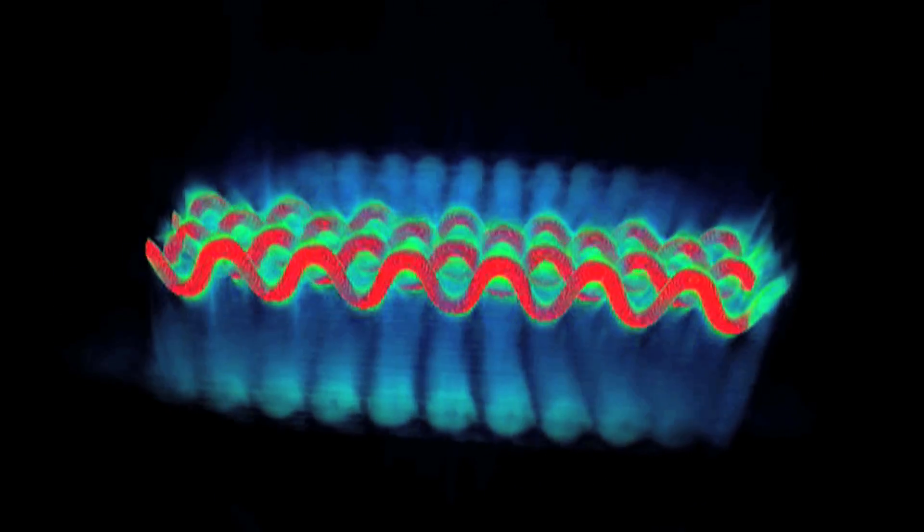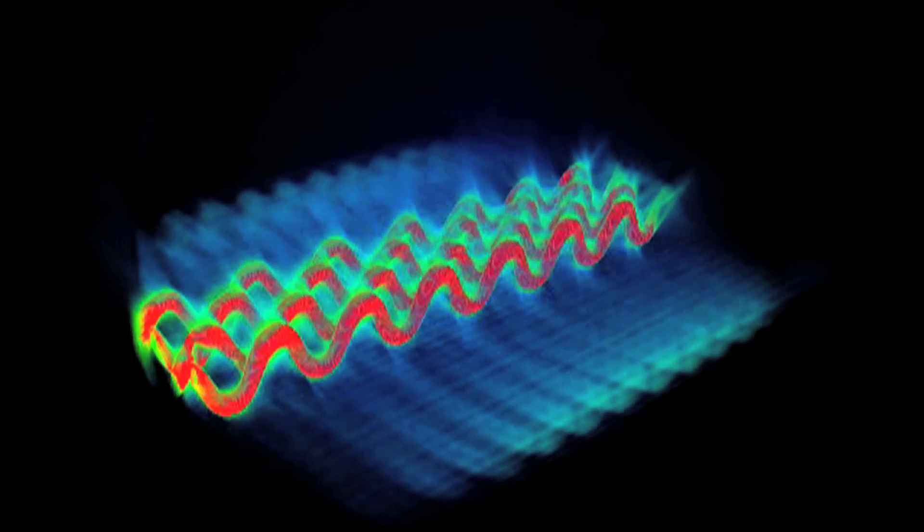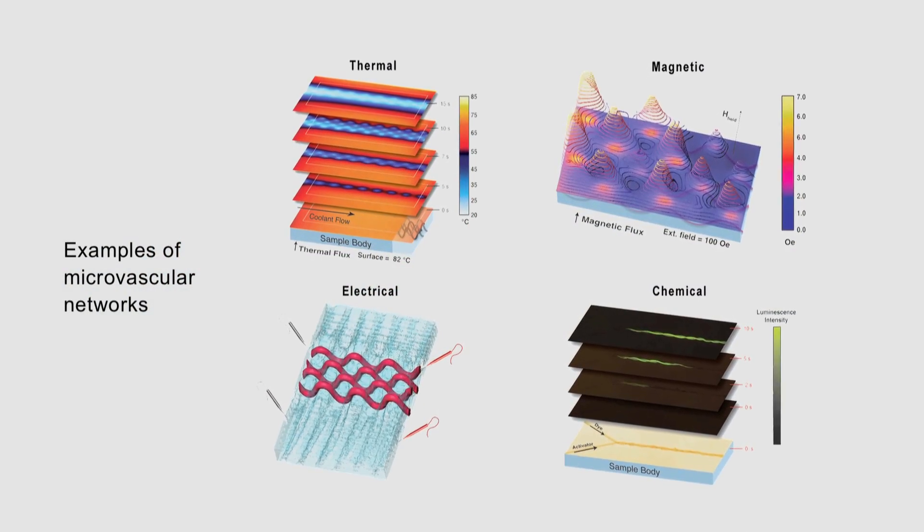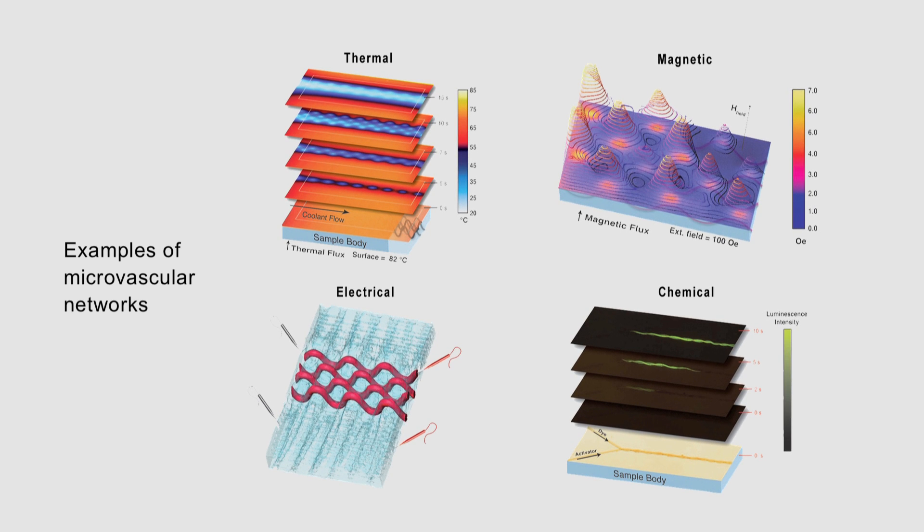And immediately when you have that ability, you start thinking of the many applications and new functions that can be introduced. The door's really opened there because you don't just have to heal. You can do things like cool that material system or heat it, or you can actuate it and have it move. There's a whole host of functions that we can do right now, and that's all predicated on microvascular material systems.